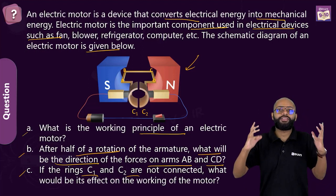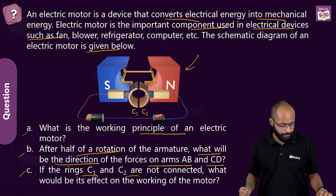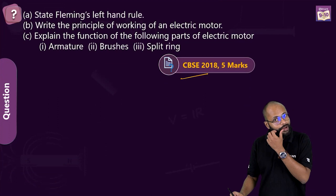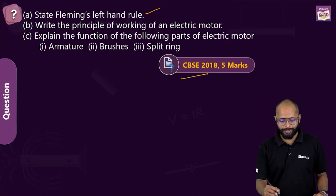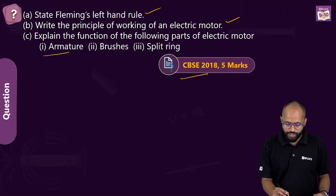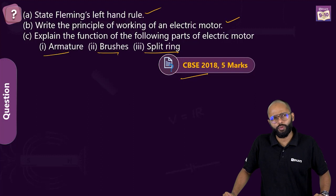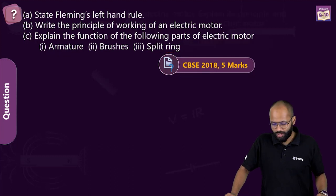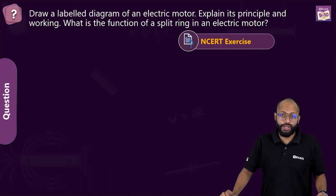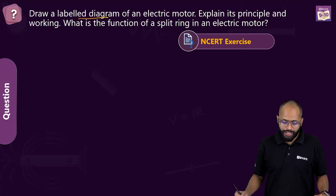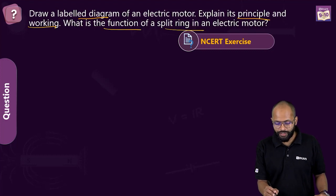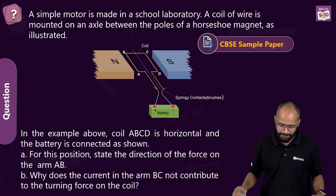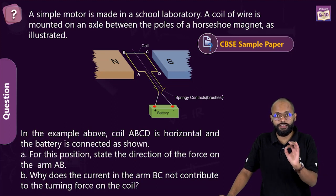In that one question, the whole motor was asked — whatever was possible was asked. This is something our team created based on what we expect might happen. Why do we expect it? Because history says so. CBSE 2018, five marks: state Fleming's left-hand rule, the principle and working of electric motor, and explain the function of armature, brushes, and split ring commutator.